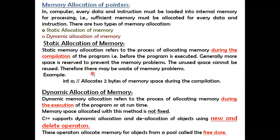The key terms to remember: static allocation happens during compilation time, dynamic allocation happens during execution or runtime. Dynamic allocation is done with the new and delete operators. These operators allocate memory from a pool called the free store — an area from which memory allocation and de-allocation occurs. If you need extra memory, it comes from the free store.